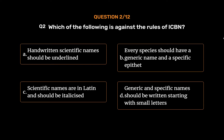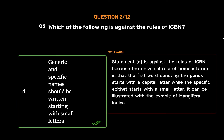The correct answer is Option D: Generic and specific names should be written starting with small letters. Statement D is against the rules of ICBN because the universal rule of nomenclature is that the first word denoting the genus starts with a capital letter while the specific epithet starts with a small letter. It can be illustrated with the example of Mangifera indica.